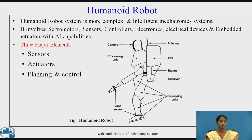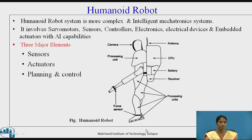The figure shows the schematic sketch of a humanoid robot in which you can see various sensors — force sensors, camera, processing unit, antenna, central processing unit, battery, receiver, and various processing units.